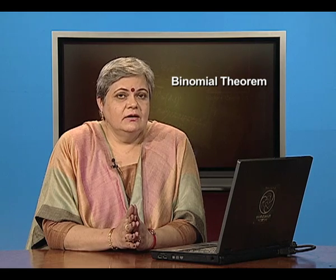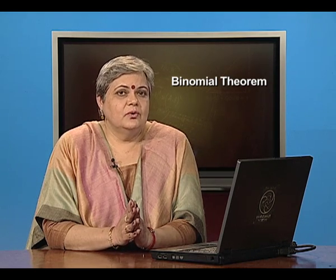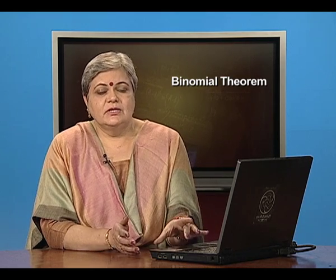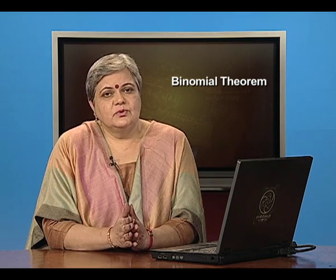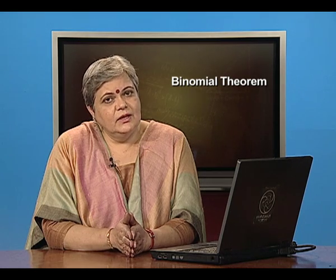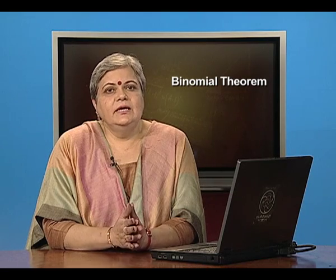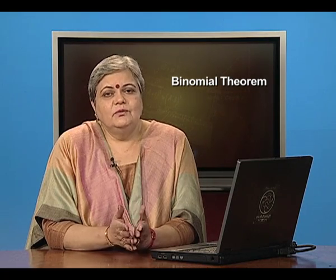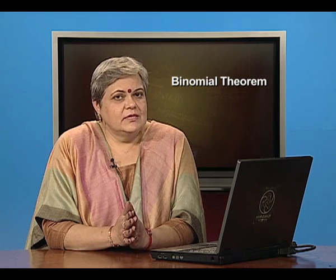Today we will focus on proving the result. The proof depends on two sub-results. The first says nC0 = nCn = 1. There is nothing new here — if there are n elements and I choose nothing, there is only 1 way; if I choose all n, also only 1 way. You may algebraically verify that nC0 and nCn, irrespective of n, always equal 1.